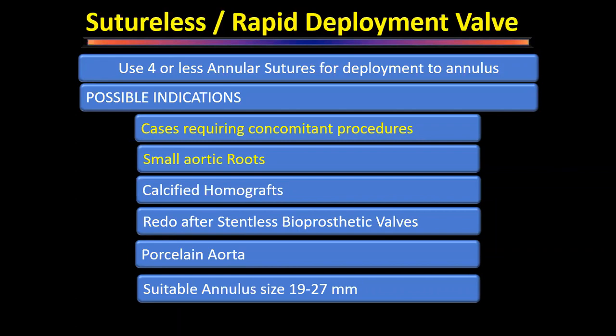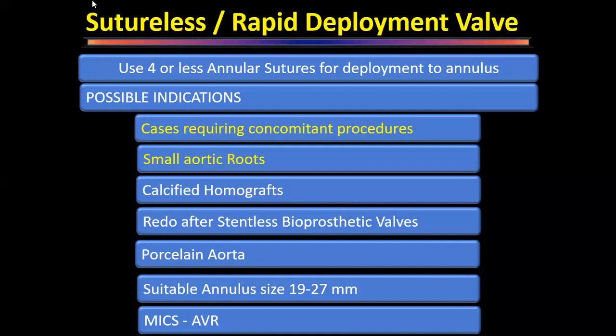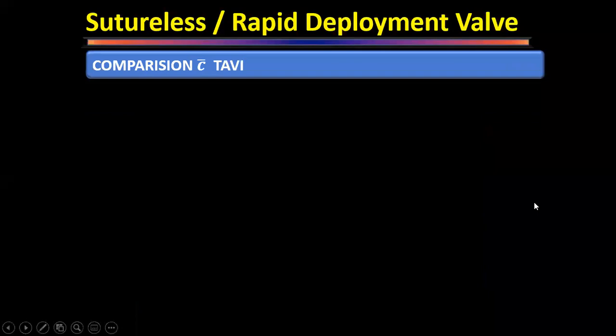Even a 19 mm size is satisfactory for the Indian population, but if a patient has a large body surface area, 19 mm may still cause mismatch. For minimally invasive aortic valve replacement, sutureless valves decrease operative time and simplify implantation due to fewer required sutures.